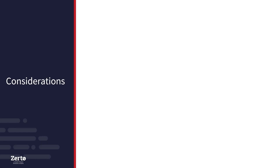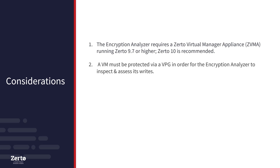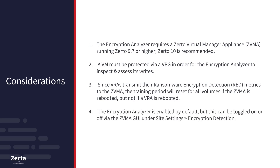When using real-time encryption detection, there are a few considerations. First, the encryption analyzer requires a Zerto Virtual Manager Appliance, or ZVMA, that is running Zerto 9.7 or higher. Zerto 10 is recommended. Second, a VM must be protected via a VPG in order for the encryption analyzer to inspect and assess its writes. Since VRAs transmit their ransomware encryption detection metrics to the ZVMA, the training period will reset for all volumes if the ZVMA is rebooted, but not if a VRA is rebooted. Lastly, the encryption analyzer is enabled by default, but this can be toggled on or off via the ZVMA GUI under Site Settings and Encryption Detection.